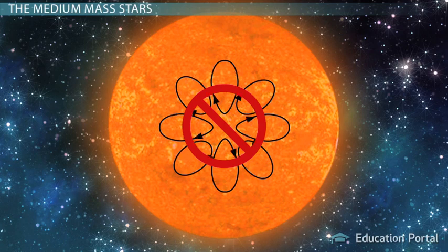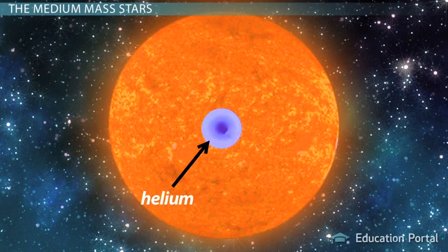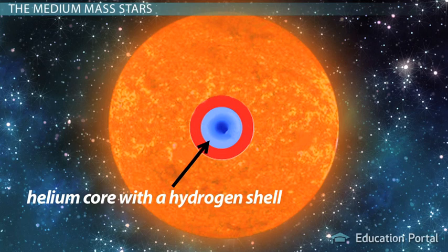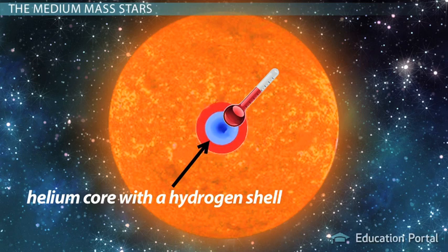This means that when the hydrogen is used up in the core, the core becomes a helium core, one that's surrounded by the hydrogen shell. The helium can't ignite right away to produce energy. In order to ignite, the core must get much hotter. It eventually does become hotter as it contracts, and the helium ignites to produce a carbon-oxygen core.